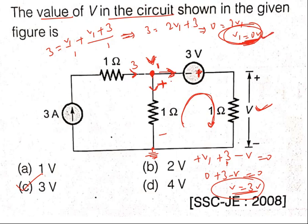After getting V1, apply KVL in the loop: plus V1, plus 3, minus V equals 0. Simplifying gives V equals 3 volts.